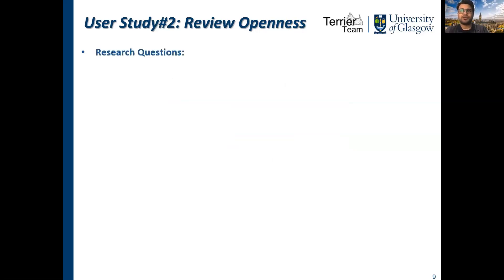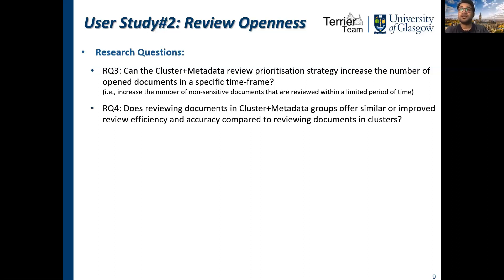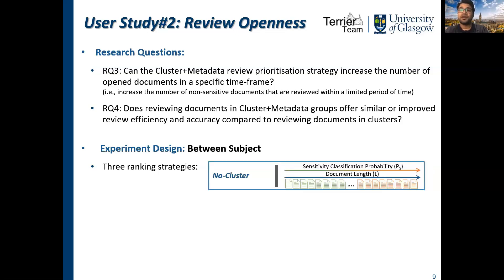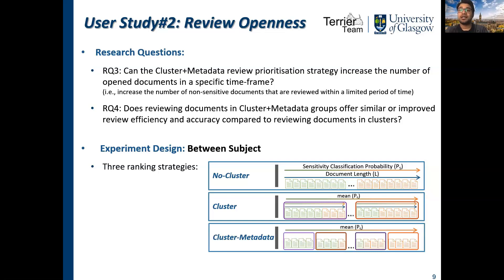Moving on to the review openness study, we addressed the following two research questions: Does our proposed approach for splitting large clusters using metadata attributes for review prioritization increase openness — that is, the number of non-sensitive documents reviewed within a limited period? And do these cluster-plus-metadata document groups offer similar review efficiency improvements compared to the original clusters? In this study, we follow a between-subject experimental design, where we compare three review prioritization strategies: first, prioritizing documents without clusters using sensitivity probabilities from a sensitivity classifier and document lengths; second, prioritizing large document clusters using their mean sensitivity probabilities, followed by prioritizing documents within each cluster; and finally, our proposed method of prioritizing cluster-plus-metadata groups using their mean sensitivity probabilities, followed by prioritizing documents within each group.